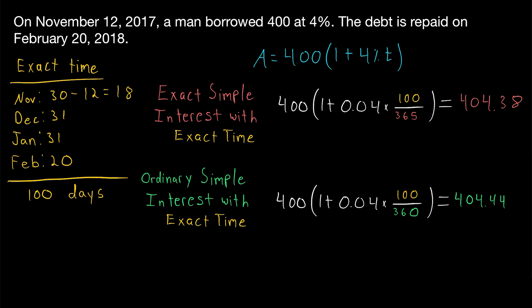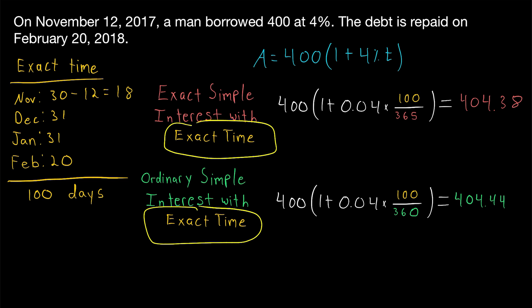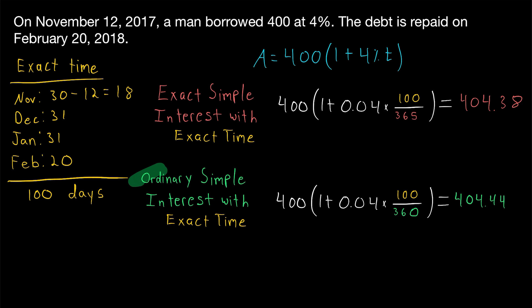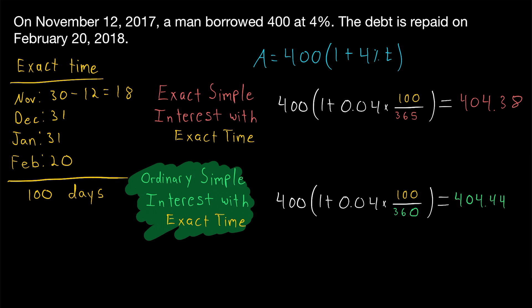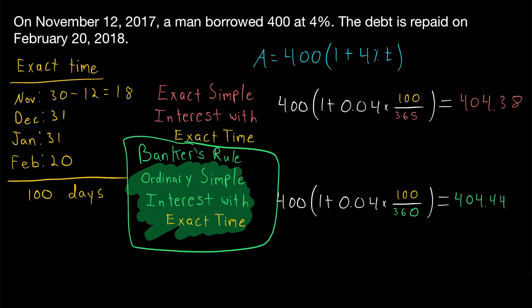We'll go over the other method of counting days — approximate time — in another lesson. Approximate time assumes that whole months have 30 days, which isn't true, but that's the convention. Today we covered exact time, which counts the actual number of days between two dates, including the last day but not the first. One final thing: calculating simple interest using ordinary simple interest with exact time is often called the banker's rule. There are four combinations of exact/ordinary simple interest with exact/approximate time, and the banker's rule is the most common method.